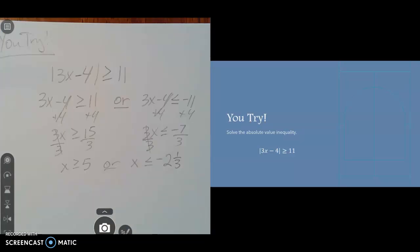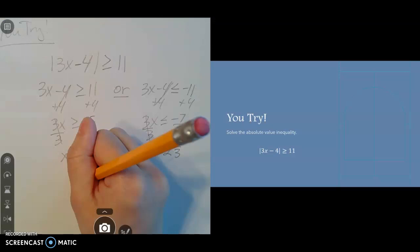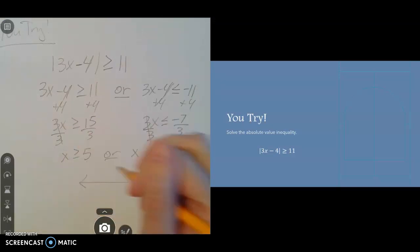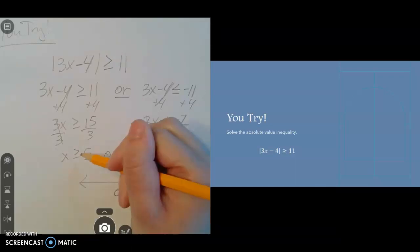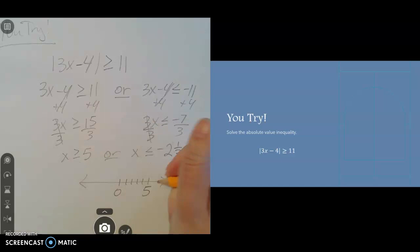All right, let's go ahead and graph it then. So the first one is x is greater than or equal to 5. So here's 0, 1, 2, 3, 4, 5 on our number line. Since it's or equal to, we're going to use a bracket. Since it's greater than, we're going to the right.